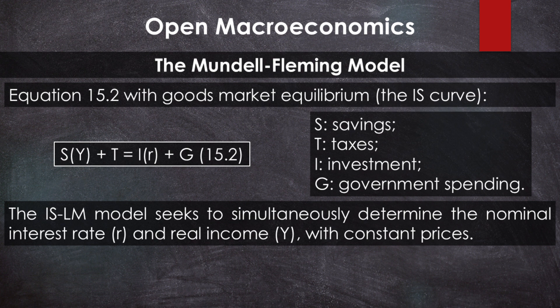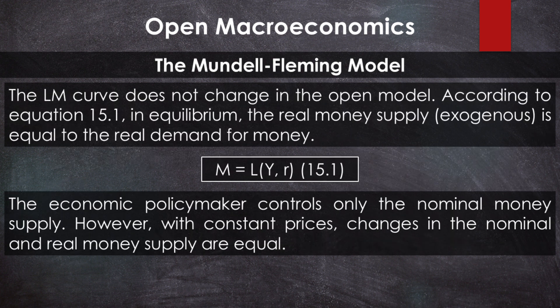But what distinguishes the IS-LM-BP model from the closed economy IS-LM model? The transition from a closed to an open model will not affect the LM curve, which represents the equilibrium conditions in the money market. Equation 15.1 shows that in equilibrium, the real money supply — which we consider as exogenous, meaning it is controlled by the national policymaker — must be equal to the real demand for money. In reality, economic policymakers only control the nominal money supply. However, since we assume fixed price levels, changes in the nominal supply result in the same changes in the real money supply. With fixed prices, the nominal and real money supply are equal.